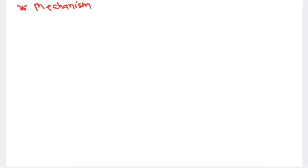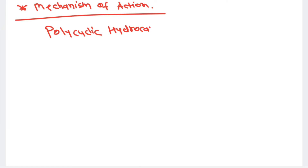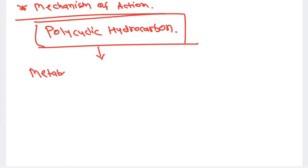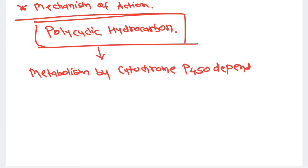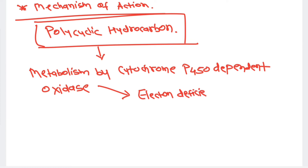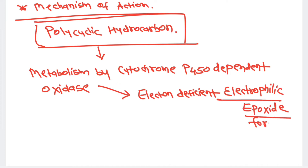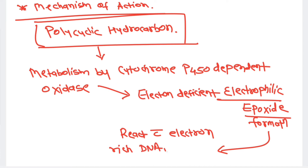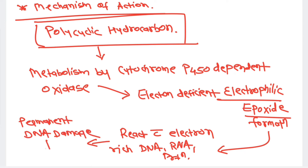The mechanism of action of polycyclic aromatic hydrocarbons: these are electron-deficient atoms that get metabolized by cytochrome P450-dependent oxidase. This leads to the formation of electron-deficient, electrophilic epoxides. These electron-deficient atoms then react with electron-rich substances like DNA, RNA, and proteins, permanently damaging and mutating the DNA, which leads to cancer.